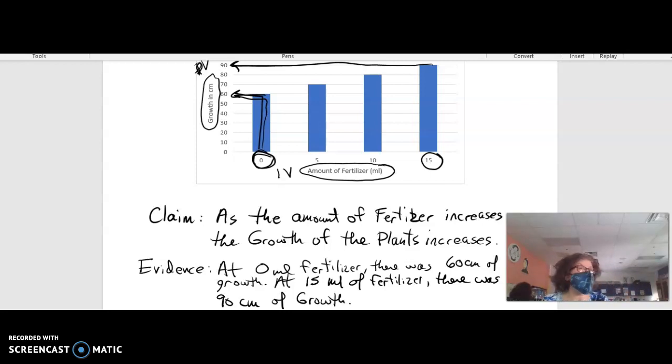That is evidence that is quantitative that supports the claim that you just made, right? Because 60 is less than 90. Now the reasoning is the last thing.